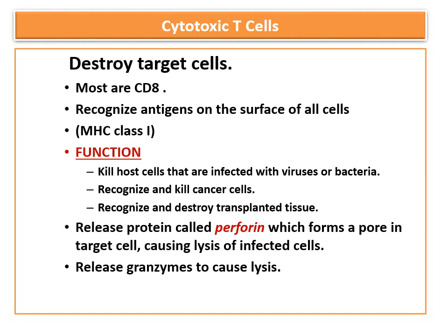Cytotoxic T cells recognize, target, and destroy foreign cells by two mechanisms: either they directly kill the target by releasing hydrolytic enzymes known as granzymes, causing lysis or rupture of the infected cell, or they cause lysis by releasing a special protein known as perforin, which forms pores in the target cells and ultimately causes rupture of the infected cell.